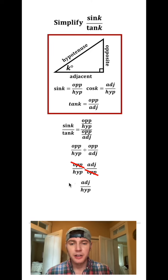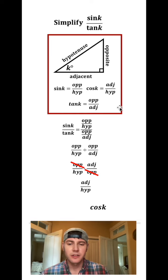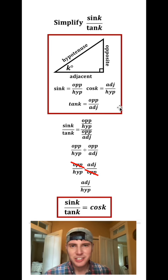Our original ratio simplified to adjacent over hypotenuse, but that is the definition of cosine of k. So we know that sine of k over tangent of k is equal to cosine of k. How exciting!